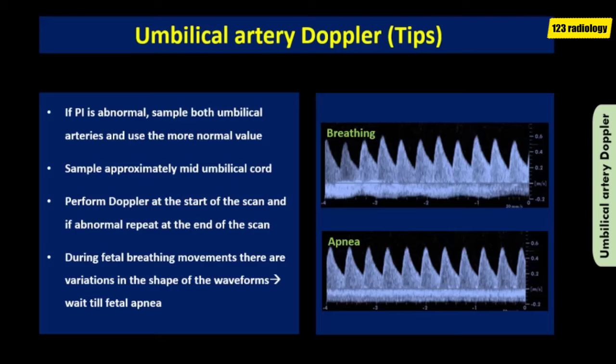Some important tips for umbilical artery Doppler: if the pulsatility index is abnormal, sample both umbilical arteries and use the more normal value. Sample approximately at the mid-umbilical cord, as sampling too close to the fetal abdomen may produce a falsely elevated pulsatility index. Perform Doppler at the start of the examination, and if abnormal, repeat at the end. Doppler examination should be conducted only during fetal apnea and in the absence of fetal hiccup or excessive movement, as breathing causes variations in waveform shape.